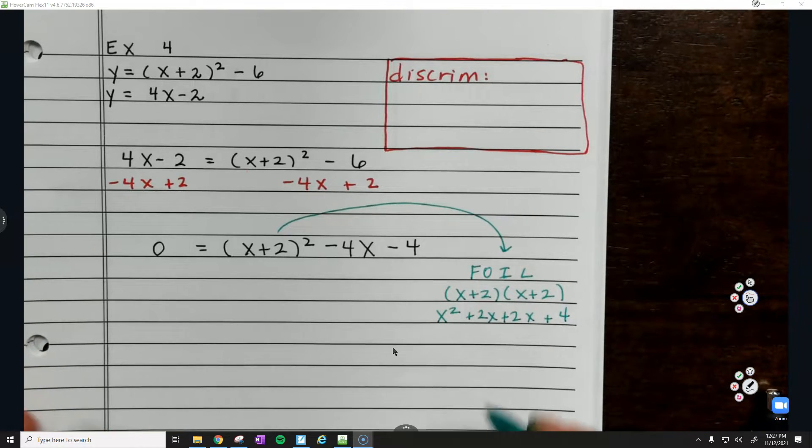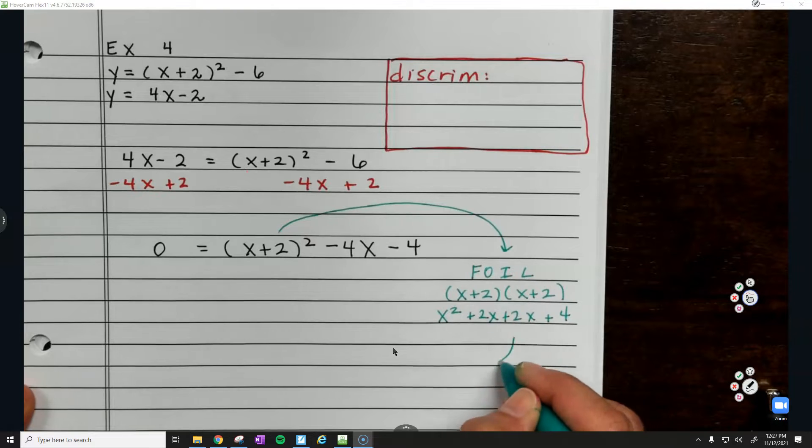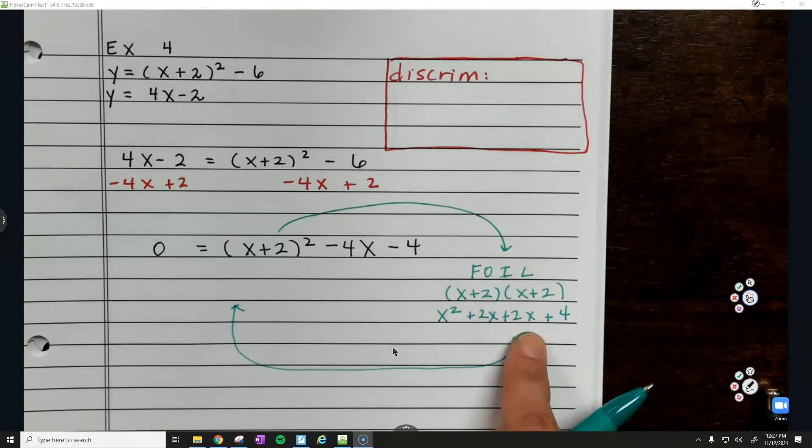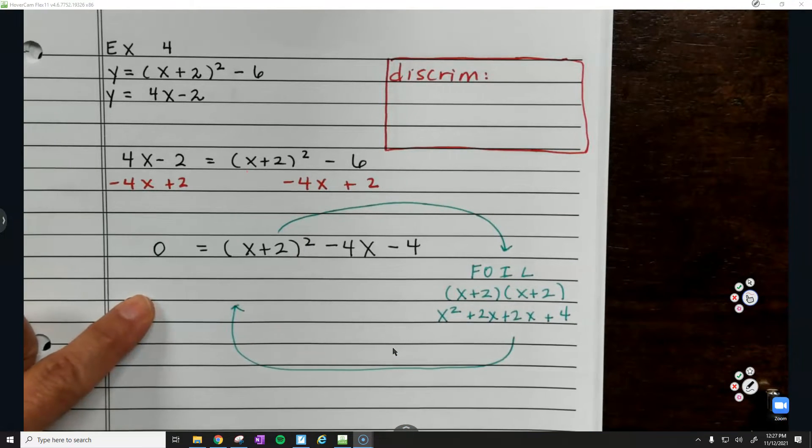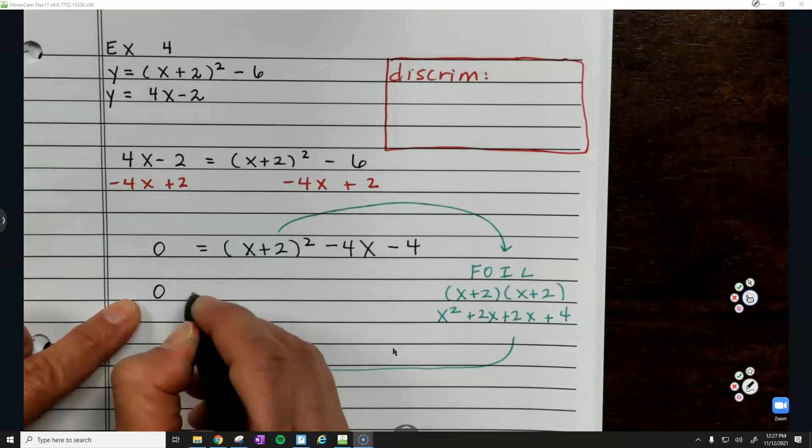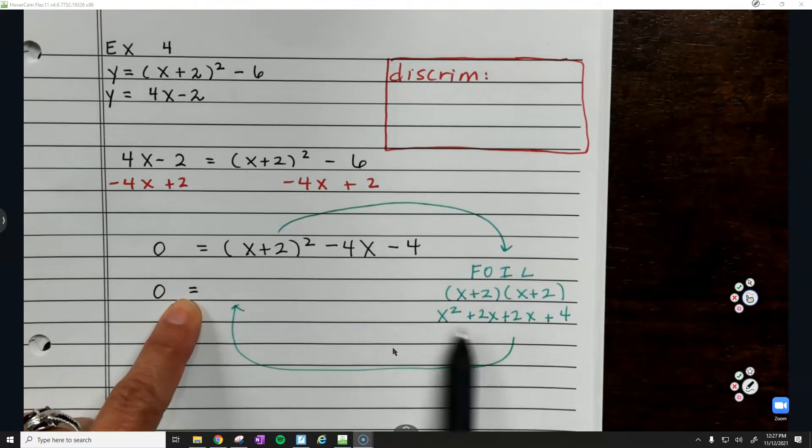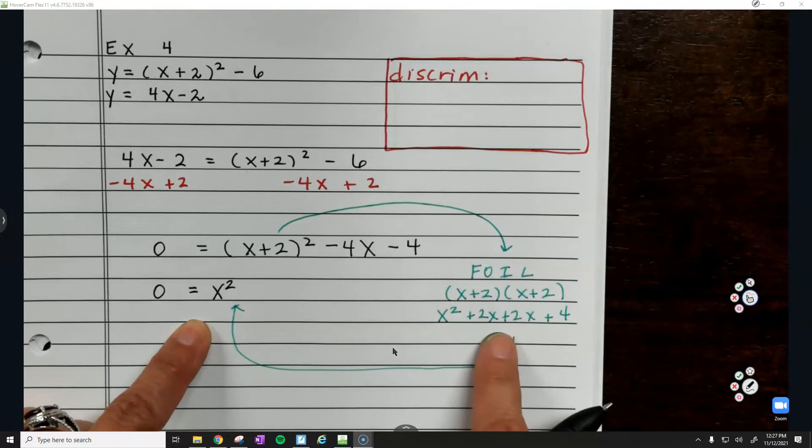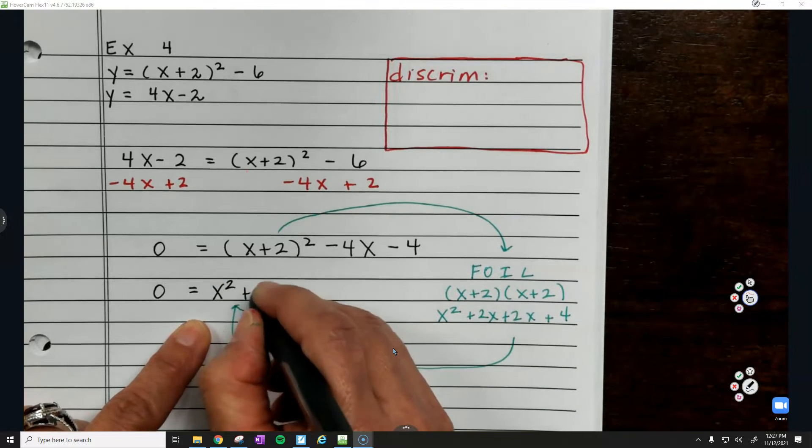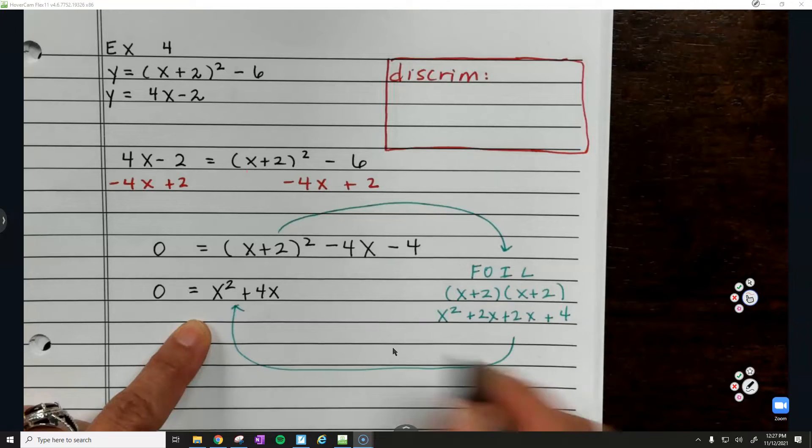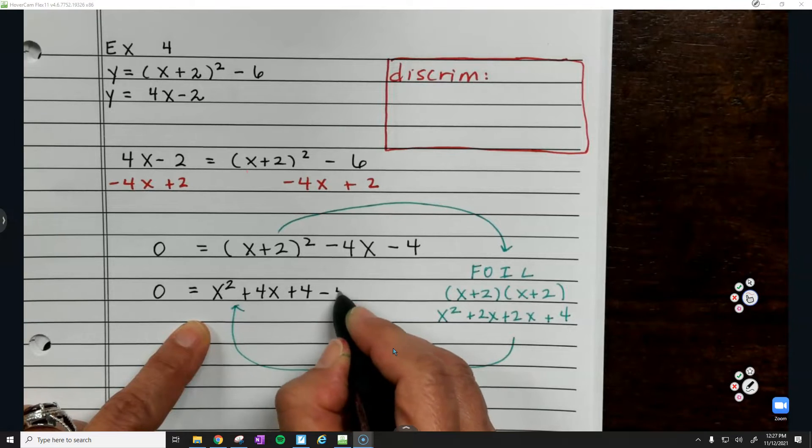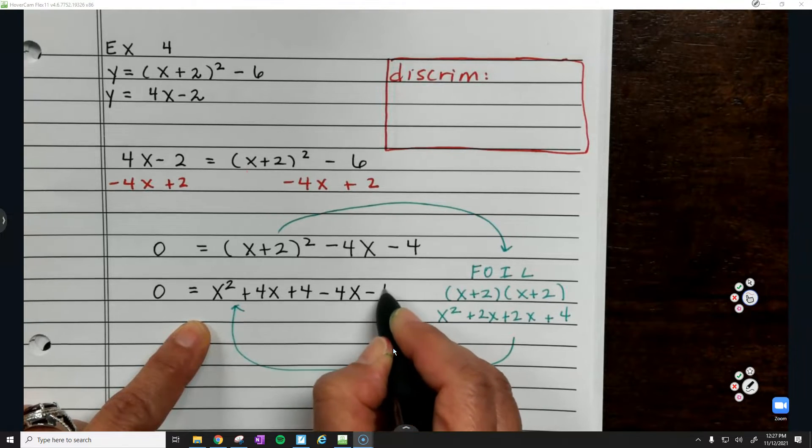So I'm going to recopy the 0, recopy the equals, and write x² - don't forget that's 4x plus 4x plus 4. And then don't forget all this other stuff that was already there: minus 4x minus 4.